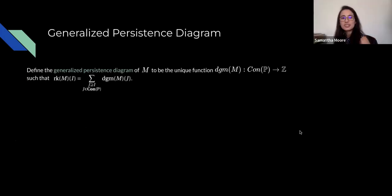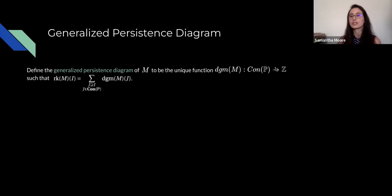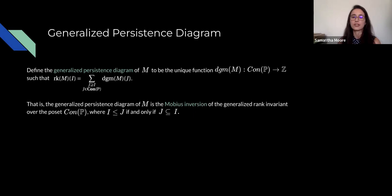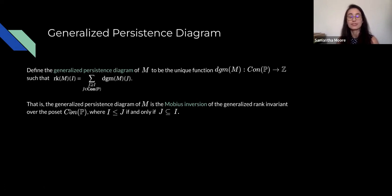The generalized persistence diagram is also a function from connected sets to integers. It is the unique function such that the rank of M on any connected set I equals the sum of diagram values of M on connected sets J containing I. In other words, the generalized persistence diagram is the Möbius inversion of the generalized rank invariant over the poset of connected sets.